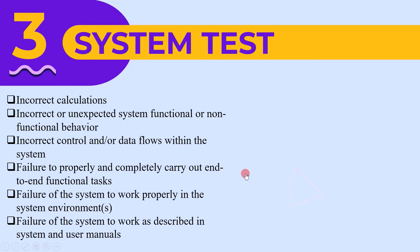To summarize, the six defects found during system testing are: incorrect calculations; incorrect or unexpected system functional or non-functional behavior; incorrect control or data flows within the system; failure to properly and completely carry out end-to-end functional tasks; failure of the system to work properly in the system environment; and failure of the system to work as described in system and user manuals.